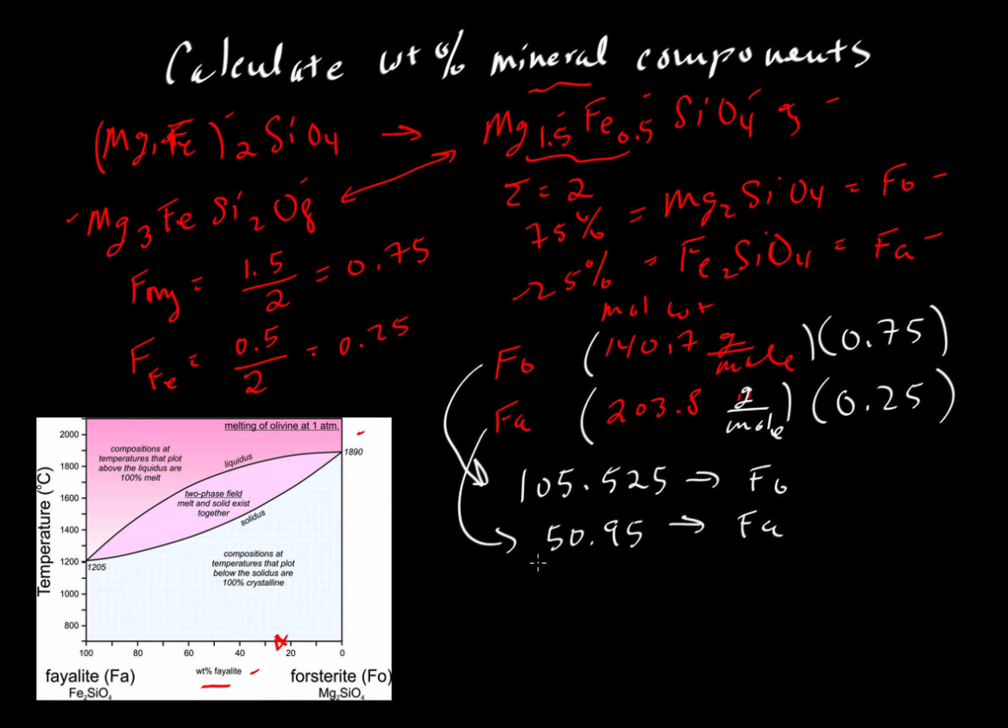If we want the weight percent, we sum these two numbers. The total weight in the system as we've calculated is 156.475. We're taking the weights of forsterite and fayalite and adding them together.